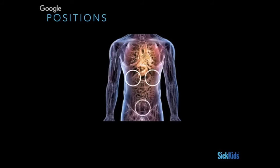For probe positions — two things to point out: the lungs are highlighted in red because we're really talking about the eFAST, the extended or enhanced FAST. I'm not covering the lung component today — that's being covered next week. The first area we're going to talk about is the right upper quadrant.